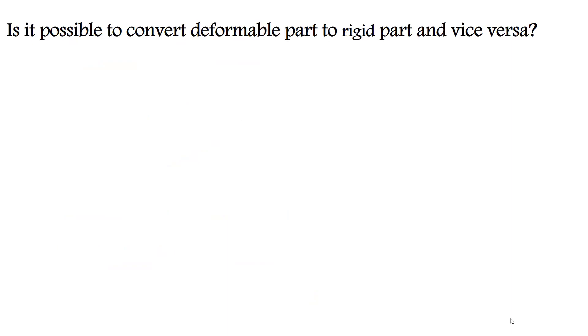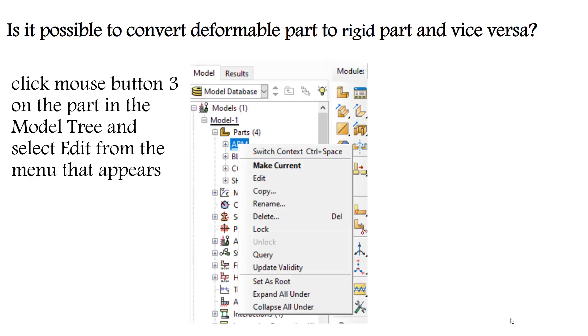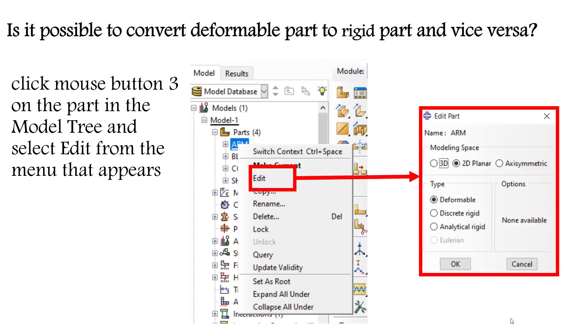Is it possible to convert deformable part to rigid part and vice versa? Yes, you can do it easily by right-clicking on the part in the model tree and selecting edit. Then you can choose the type of your part.